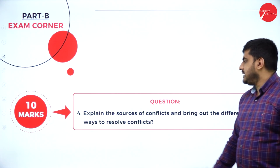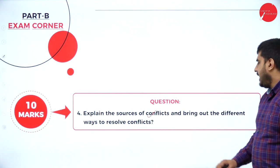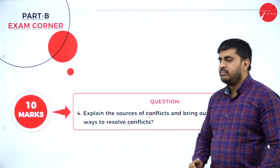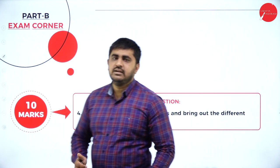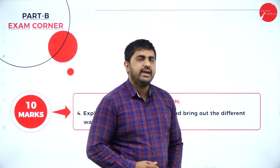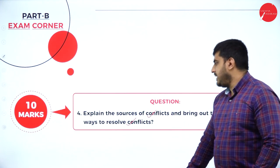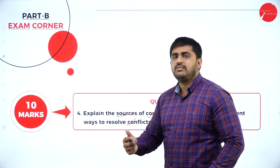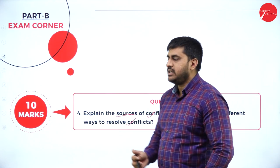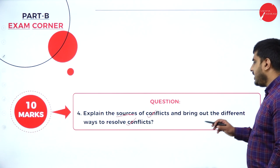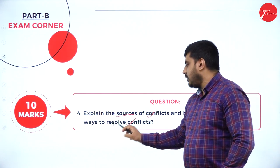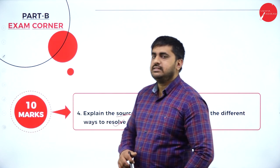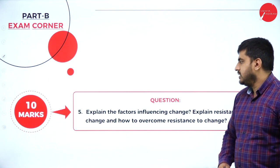Next: explain the sources of conflicts and bring out the different ways to resolve conflicts. Conflict is any misunderstanding inside the organization. Give one definition of conflict, then explain the sources — for what purpose conflict occurs inside the organization — and then bring out the different ways to resolve conflicts and how to deal with them to set things right.